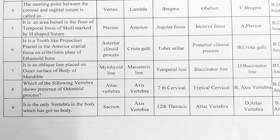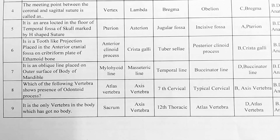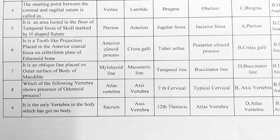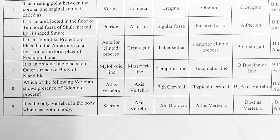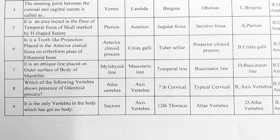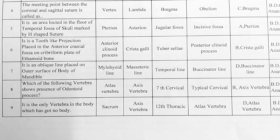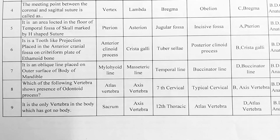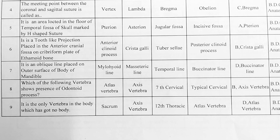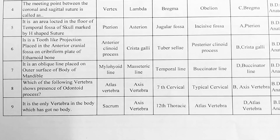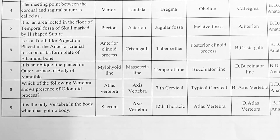Next. Which of the following vertebra shows presence of odontoid process? Options — A: atlas vertebra, B: axis vertebra, C: 7th cervical vertebra, D: typical cervical vertebra. Option B is correct, axis vertebra.